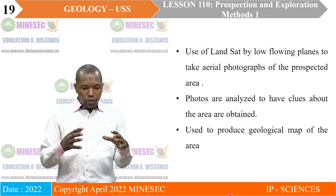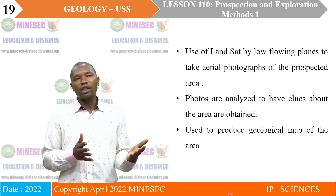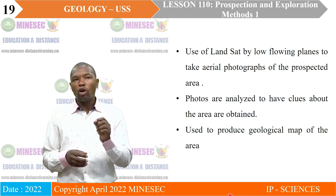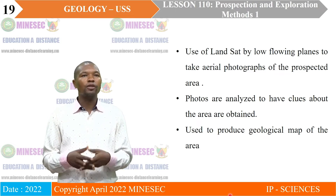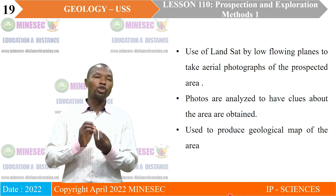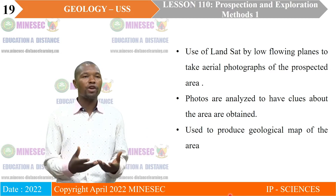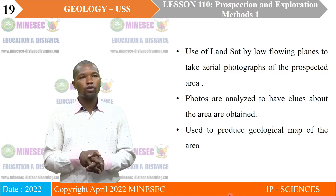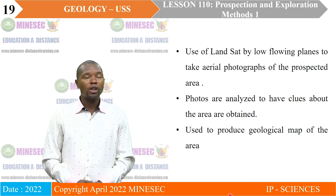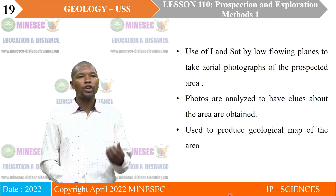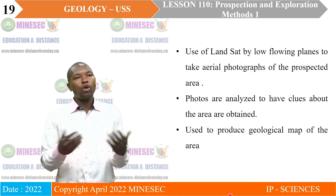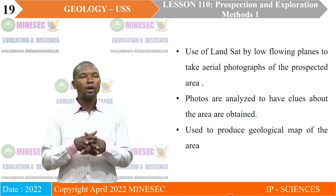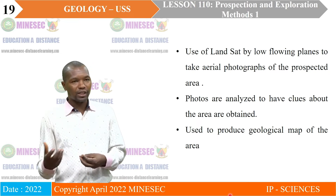Air-eye photography involves the use of Landsat by low-flying planes to take air-eye photographs of the prospective area. The planes must fly near the land surface so that they gather clear information about the area. The photos are analyzed to have clues about the area and what can be obtained from it, and are then used to produce geological maps of areas prospected for ores.